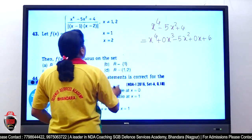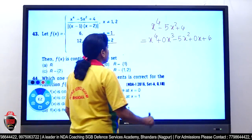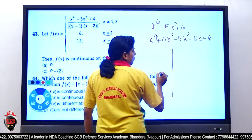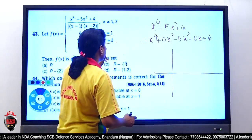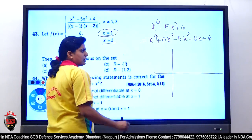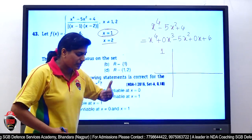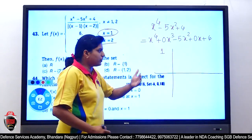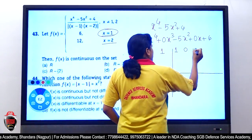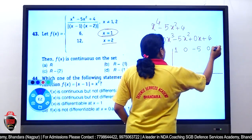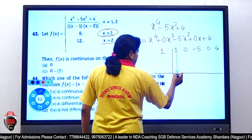We confirm the factors are x = 1 and x = 2, and we perform synthetic division. Taking the first factor x = 1, we write the coefficients of the polynomial: 1, 0, −5, 0, 4.